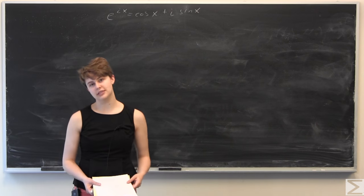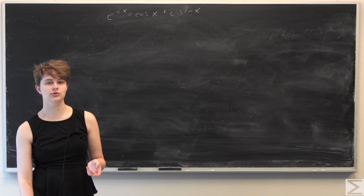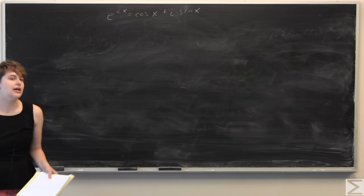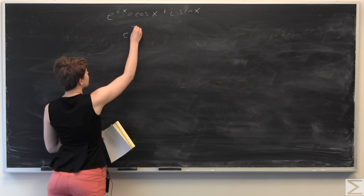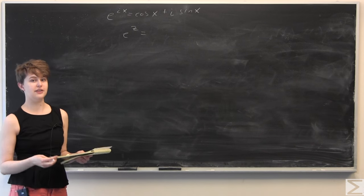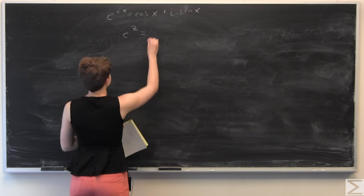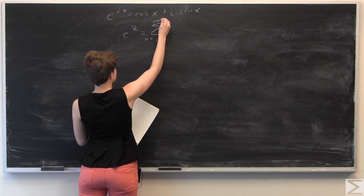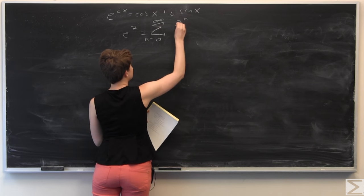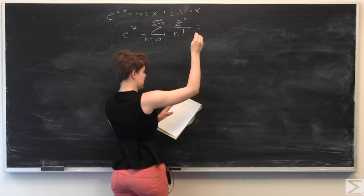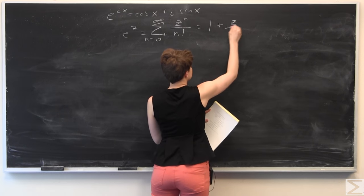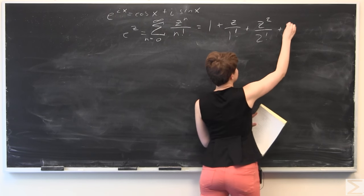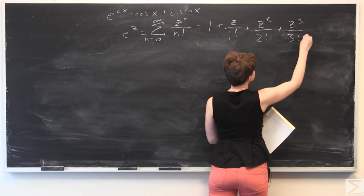There are many different ways to do this proof, but I'm going to approach it using the MacLaurin series, which is the Taylor series centered at zero. First of all, we know that the MacLaurin expansion of e to the z is equal to the sum from n equals 0 to infinity of z to the n over n factorial, which equals 1 plus z over 1 factorial plus z squared over 2 factorial plus z cubed over 3 factorial, and so on.